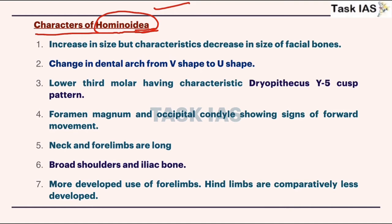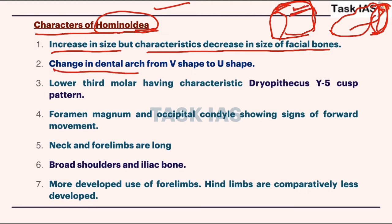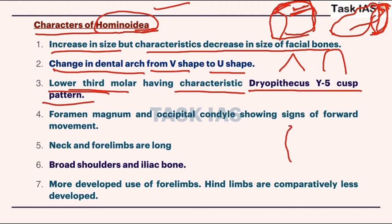Among hominoids, chimpanzee and gorilla are found in Africa; orangutan and gibbon are found in parts of Asia. Orangutan is found in Southeast Asia and earlier also in the Indian subcontinent. Characters of Hominoidea: increase in overall size but decrease in size of facial bones, showing that cranial capacity is increased while the facial part is reduced. There is a change in dental arch from V-shape to U-shape.